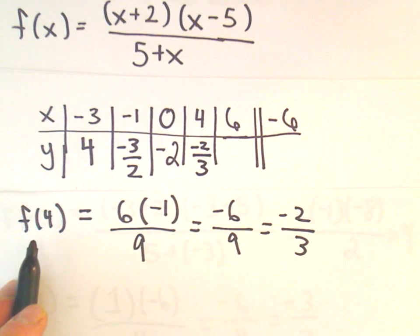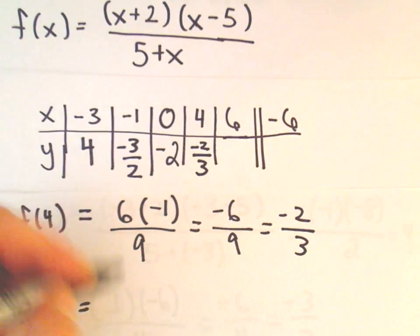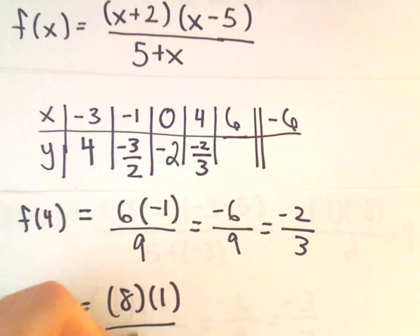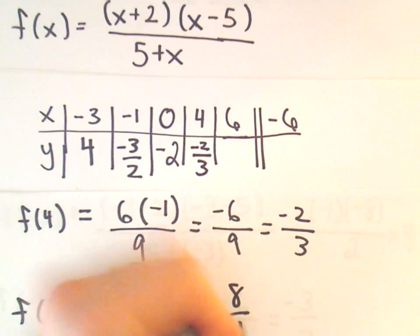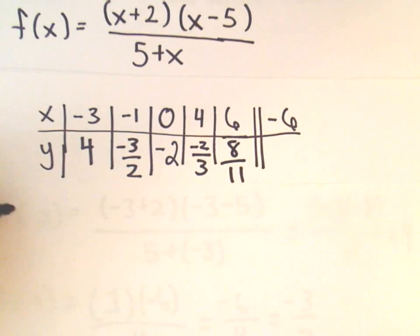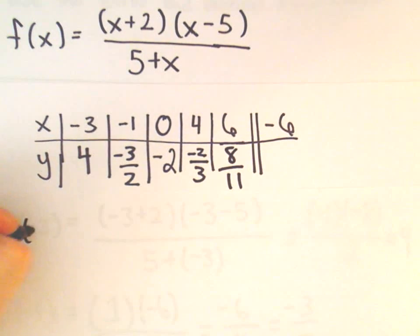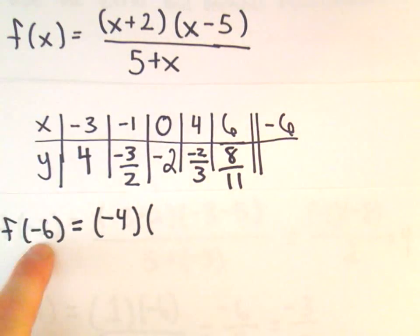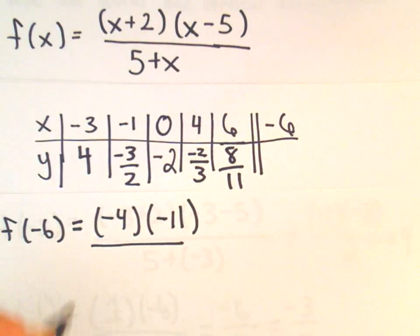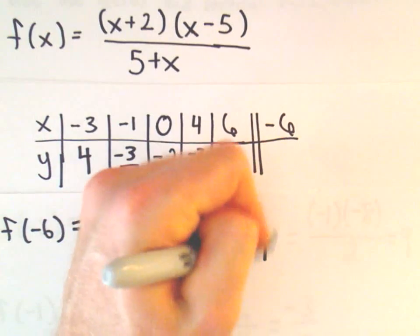All right, let's keep going. Let's plug in 6. So if we plug in 6, 6 plus 2 is 8, 6 minus 5 is 1, 5 plus 6 is 11. So we get 8 over 11. And maybe one more point here. Let's plug in negative 6. So f of negative 6, negative 6 plus 2 is negative 4, negative 6 minus 5 will be negative 11. And 5 plus negative 6, that's going to be negative 1. This will be positive 44 over negative 1, which will be negative 44.